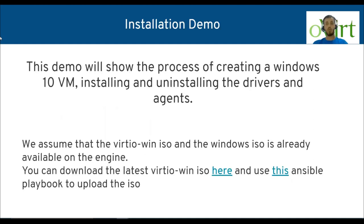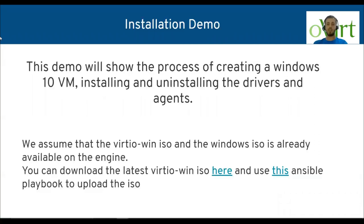Now let's have a look at a short installation demo that will basically show the process of creating a virtual machine and installing and uninstalling the drivers and agents. We assume that the VirtIO-Win ISO and the Windows ISO are already present in the engine. I provided here a link to where you can download the VirtIO-Win ISO and also a short Ansible playbook that will upload the ISO to the engine VM, so you can have the same starting point as this demo.